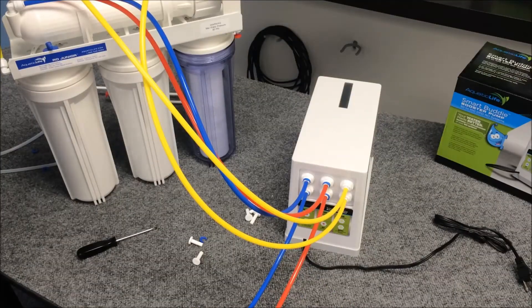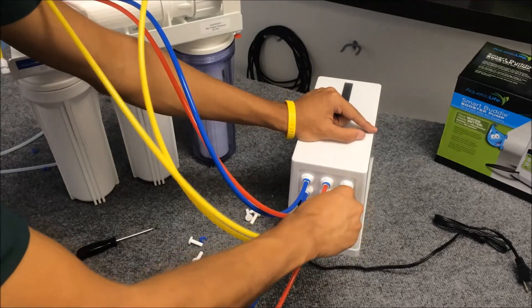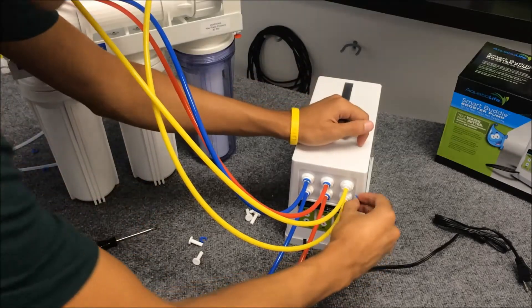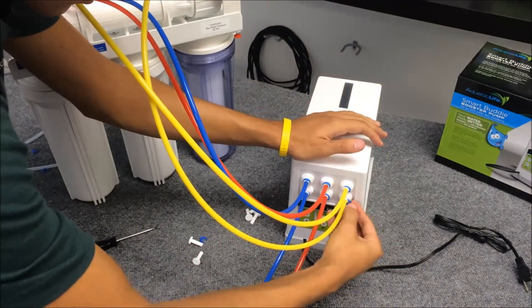Now that we've got our tubing in place, we're going to go ahead and place the blue collars back on. Before we do that, let's pull on the tubing, make sure it's all in secure. We're good to go. So let's place the collars on. One and two.